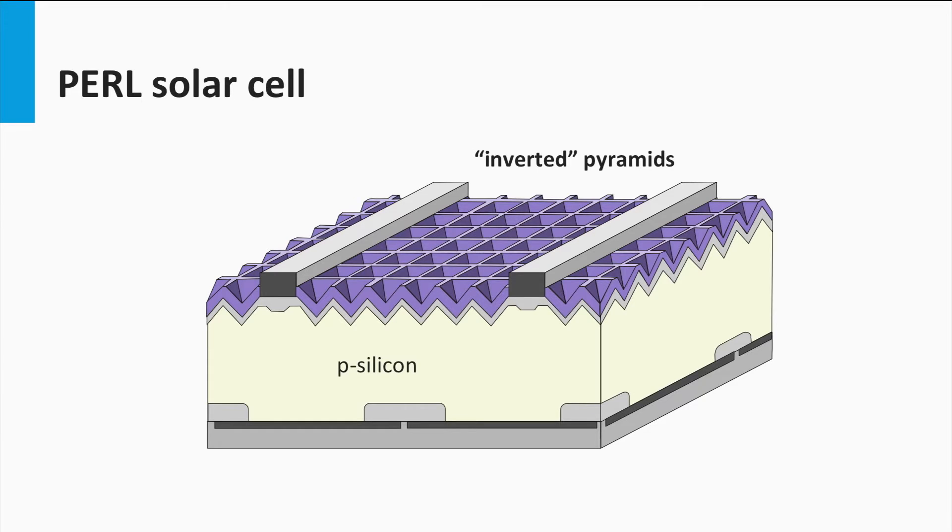First, the top surface of the solar cell is textured using inverted pyramid structures. This microscopic texture allows a fraction of the reflective light to be incident on the front surface for a second time. This enhances the total amount of light coupled into the solar cell.